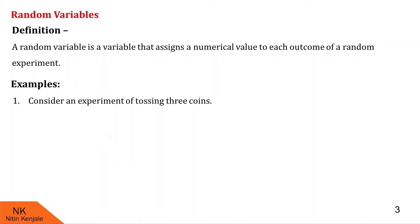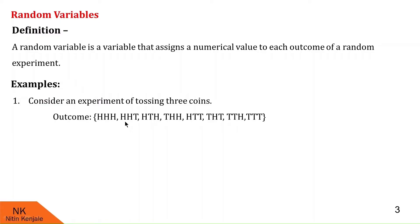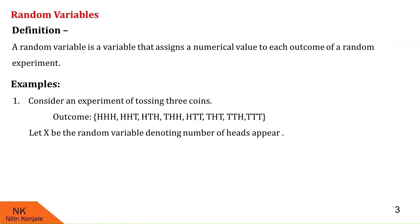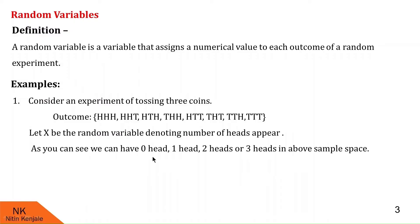Consider an experiment of tossing 3 coins. When we toss 3 coins, the outputs will be: all heads, head-head-tail, head-tail-head, tail-head-head, head-tail-tail, tail-head-tail, tail-tail-head, and all tails. Let us assign a random variable X, which denotes the number of heads that appear. There can be 0 heads, 1 head, 2 heads, or all 3 heads, so X will take values 0, 1, 2, and 3.